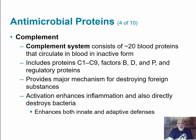Next is the complement system, which consists of 20 or more blood proteins that circulate in the blood in an inactive form. These include C1 through C9, as well as factors B, D, and P, along with regulatory proteins. The complement system provides a major mechanism for destroying foreign substances.